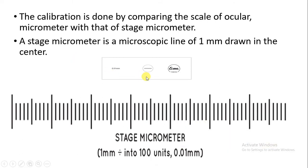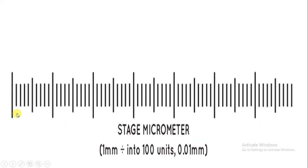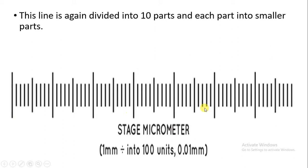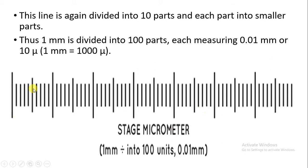The calibration is done by comparing the scale of the ocular micrometer with the stage micrometer. We need both the ocular micrometer and stage micrometer — we will coincide the lines of both to get the answer. This is the stage micrometer which has a microscopic line of 1 mm, with approximately 100 divisions. That means one division is 0.01 mm. The line is divided into 10 parts, and one division is about 0.01 mm, which you can also call 10 micron.